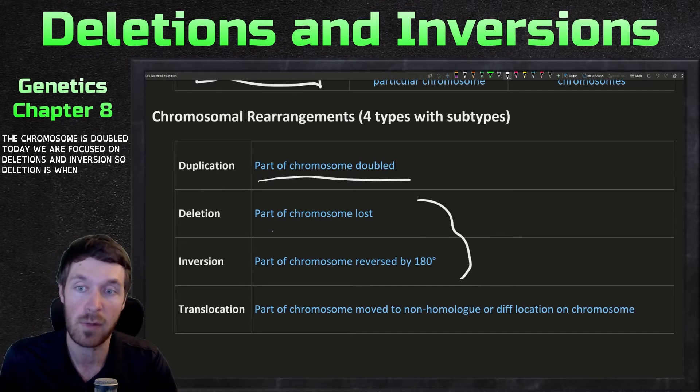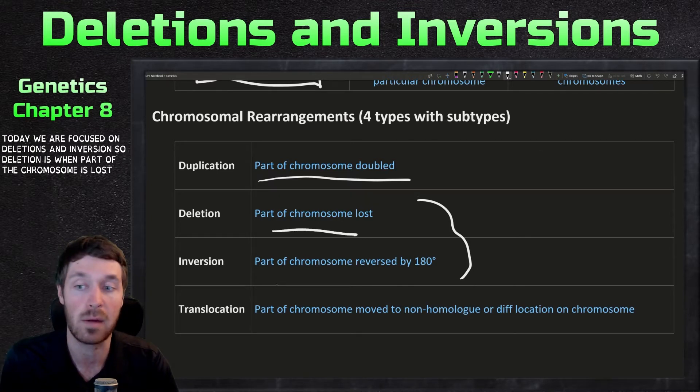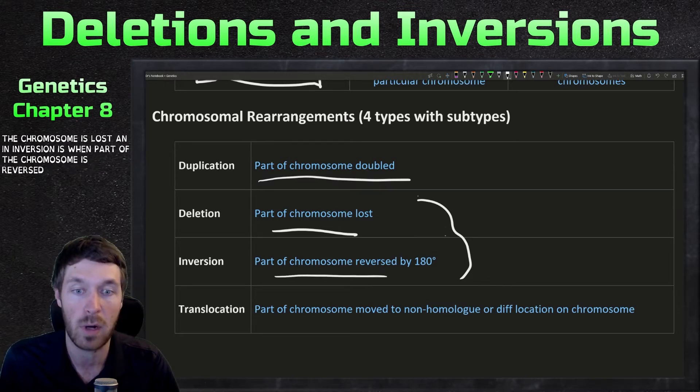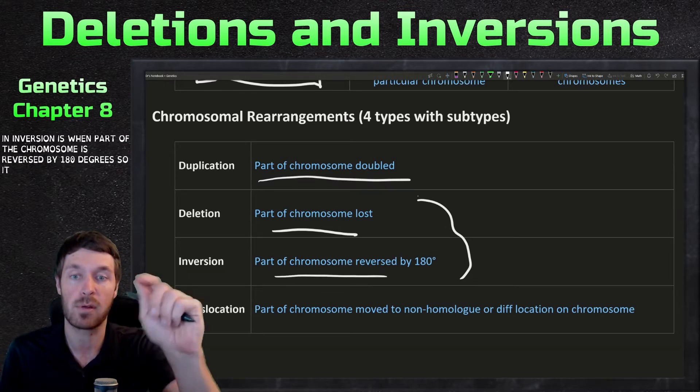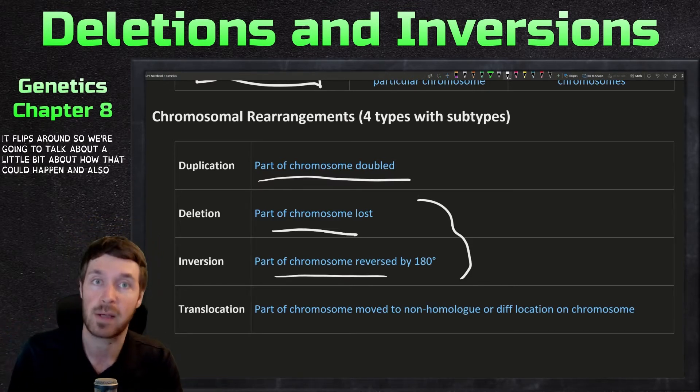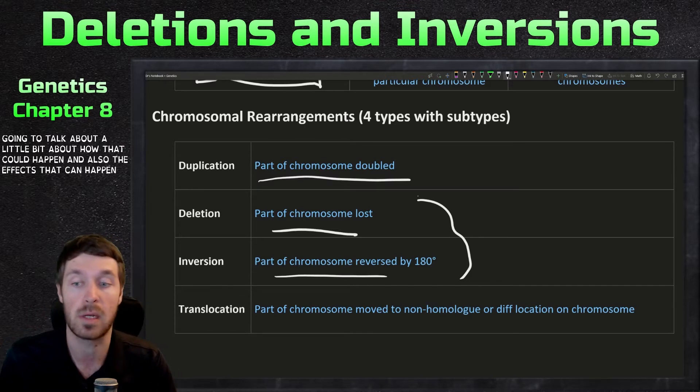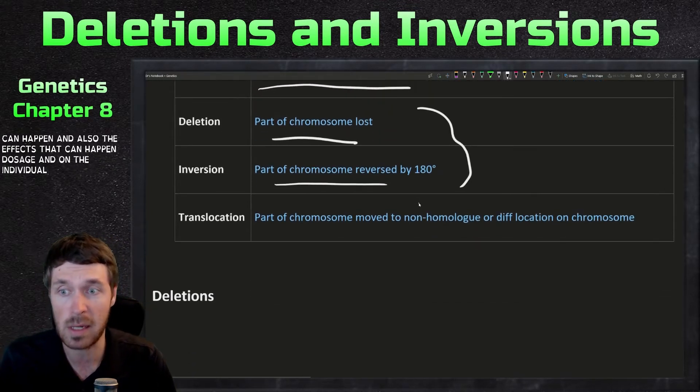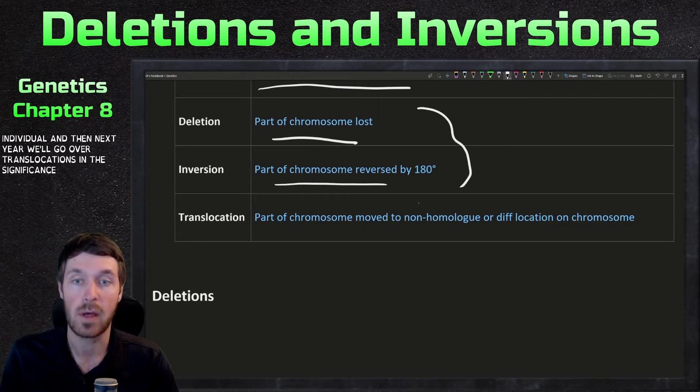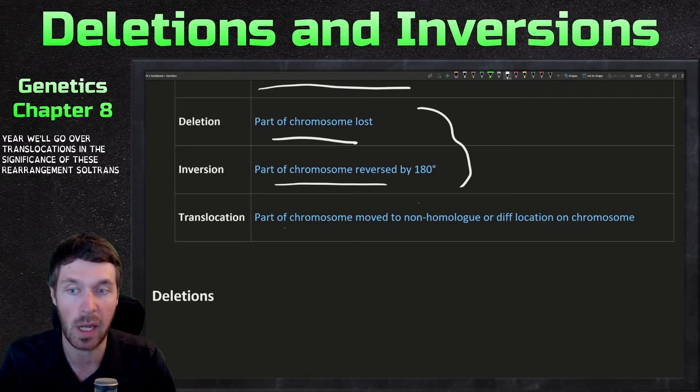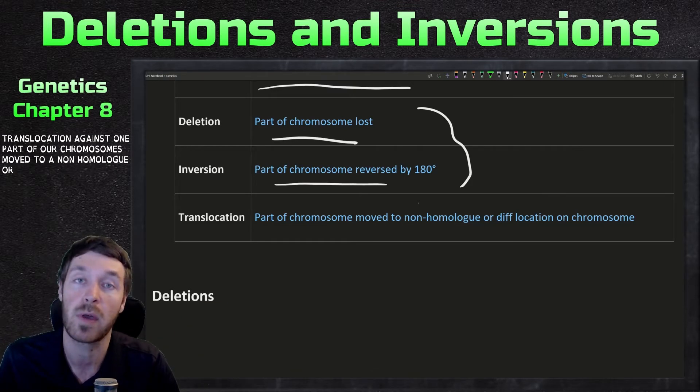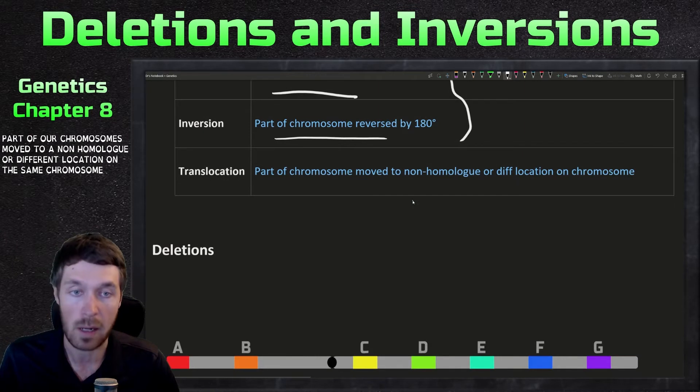So deletion is when part of the chromosome is lost, and an inversion is when part of the chromosome is reversed by 180 degrees. So it flips around. We're going to talk about a little bit about how that could happen and also the effects that could happen for gene dosage and on the individual. And then next video, we'll go over translocations and the significance of these rearrangements.